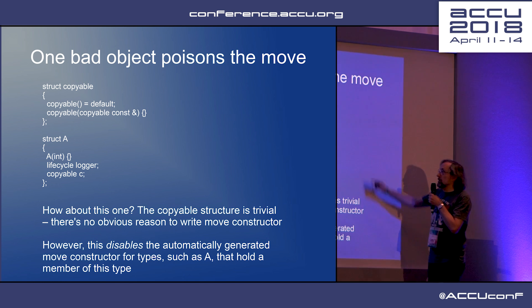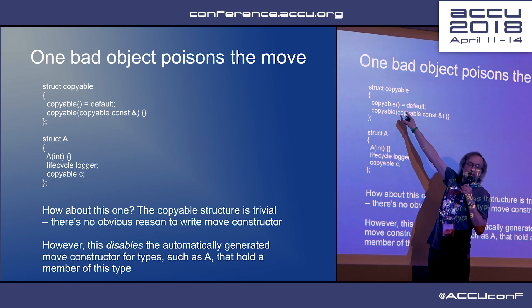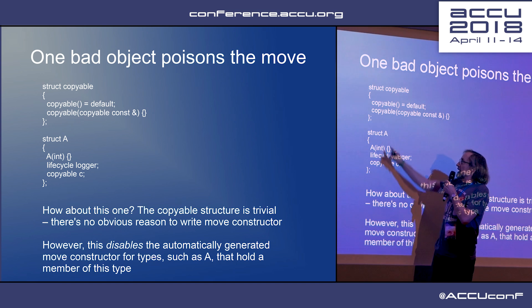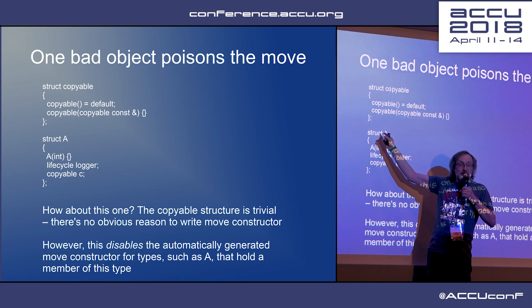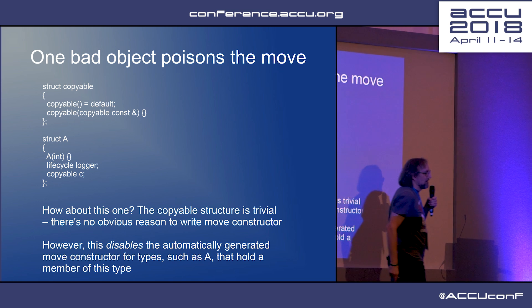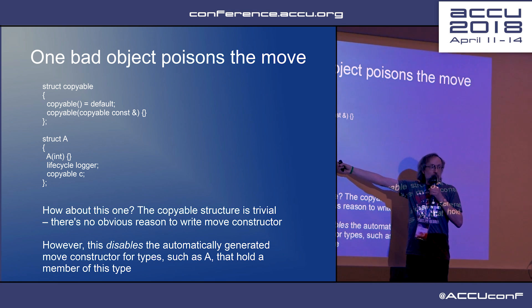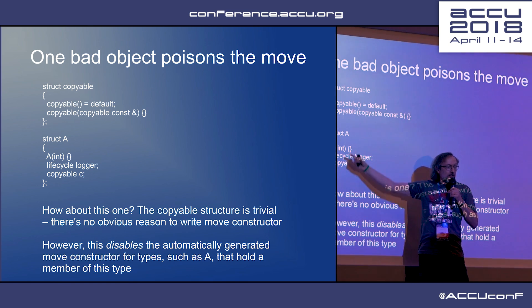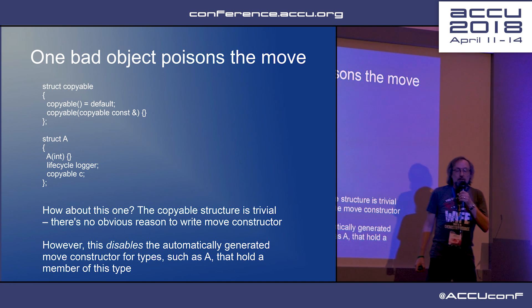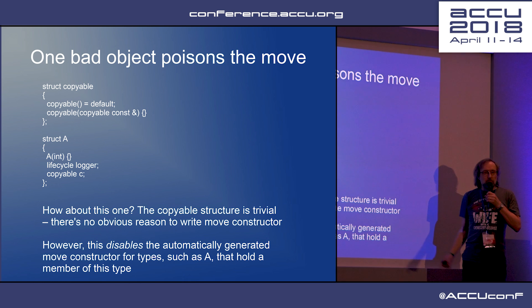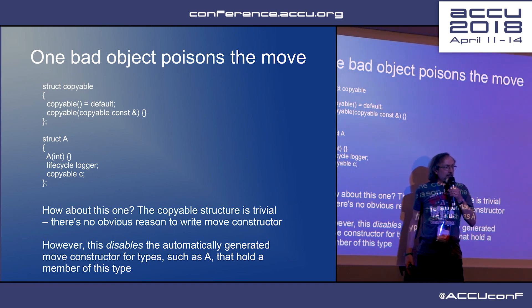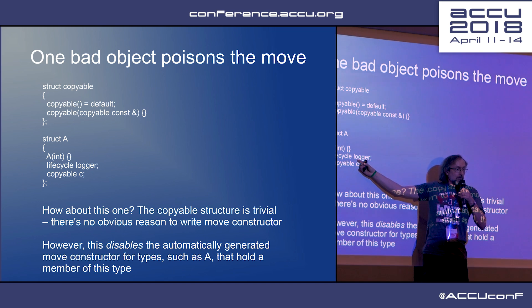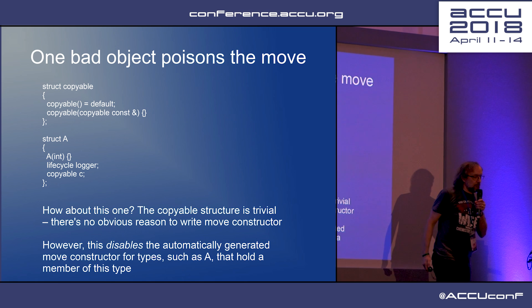You've got to be careful: one bad object can now poison the move. I've got a 'just copyable' structure — what's missing? A move constructor. How difficult is it to move or copy this empty object? Well, it's really easy — copy and move are identical in cost. So why would I bother to write a move constructor? The problem is, if I put it inside something else — a larger class — when the compiler generates constructors, it can't generate a move constructor if one of the member objects can't be moved. So that little zero-byte object now prevents moving a larger, possibly more expensive class.